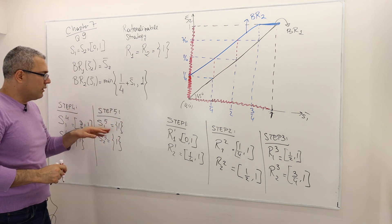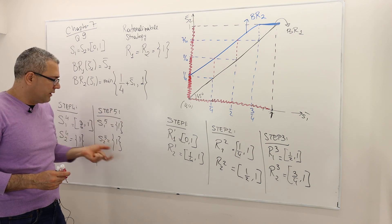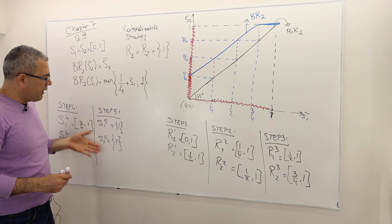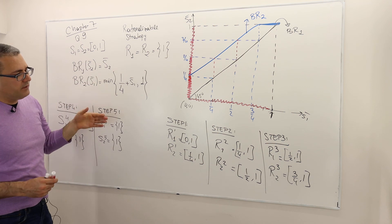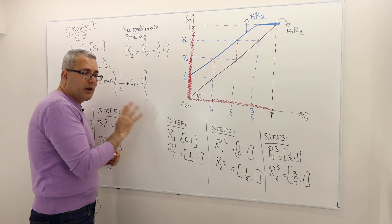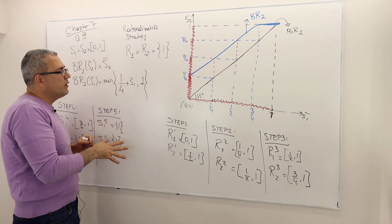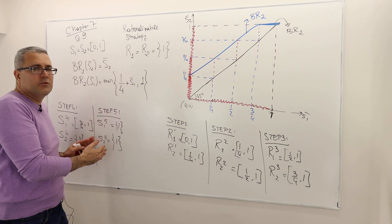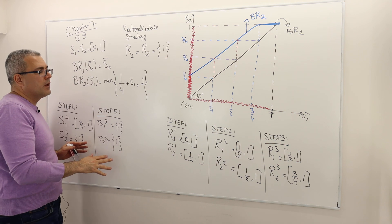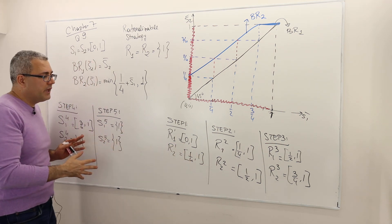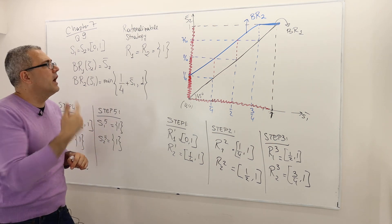Once player 1 also has only strategy 1 left, there's nothing left to eliminate and we stop. Therefore the rationalizable strategies for both players are R1 = R2 = {1} — only the strategy 1 is rationalizable. We reached this conclusion in five rounds of iterated elimination. Starting from player 1 instead of player 2 would yield the same conclusion, perhaps in four steps.